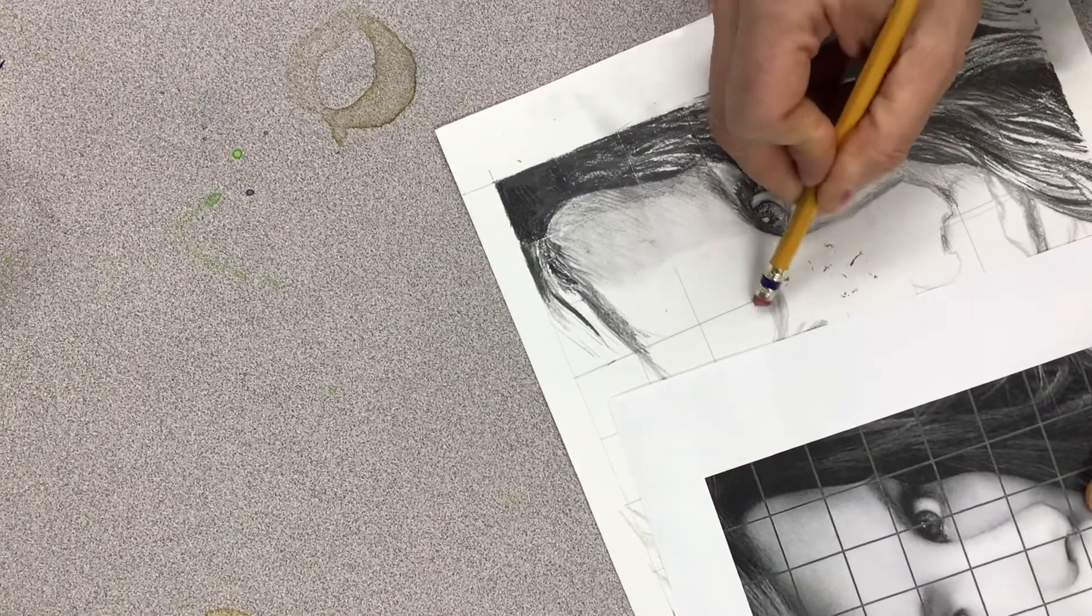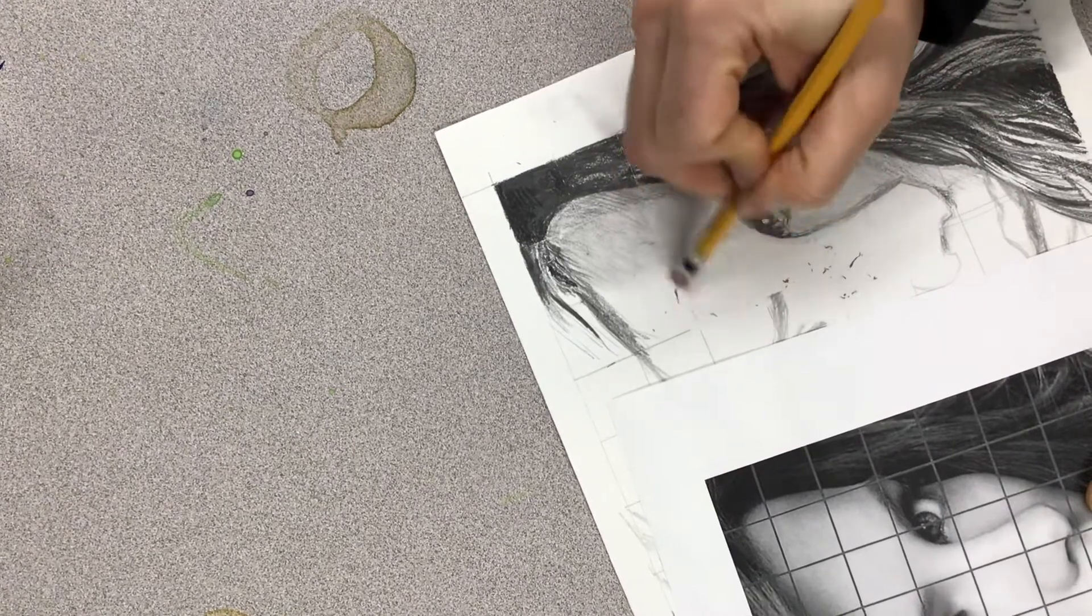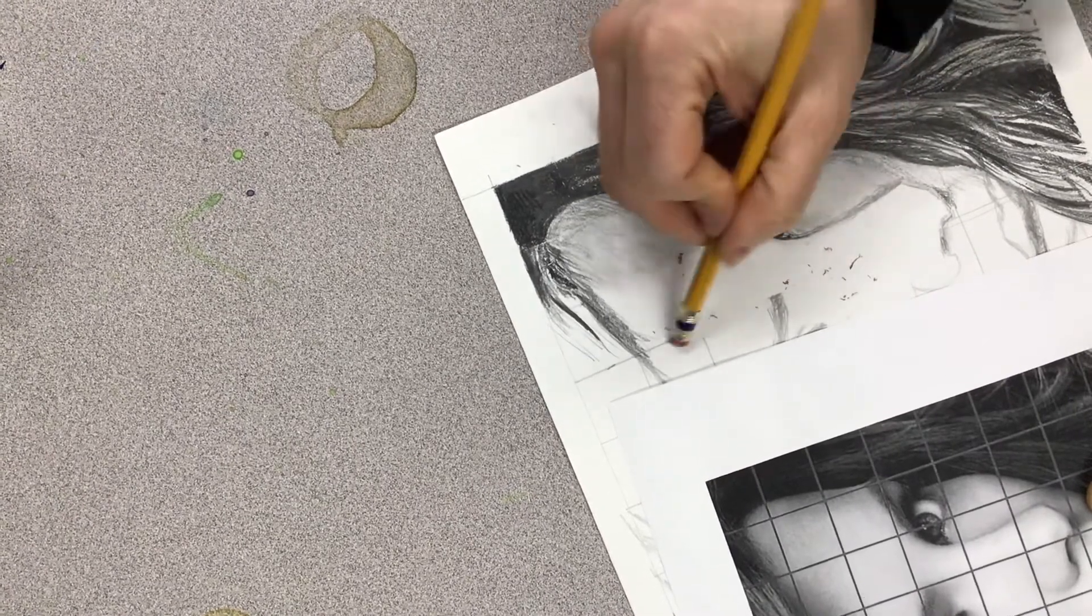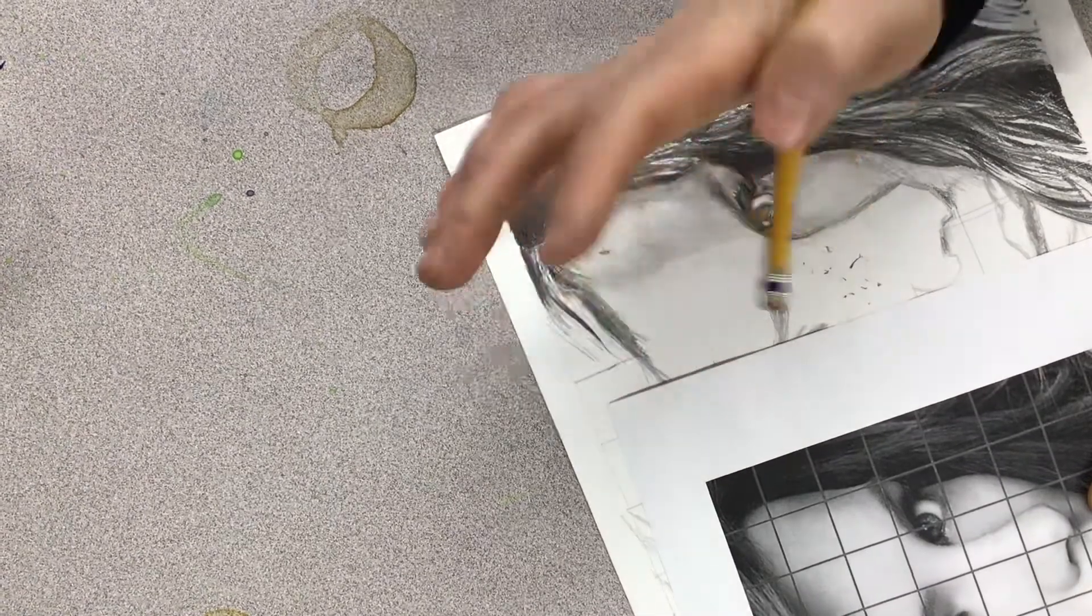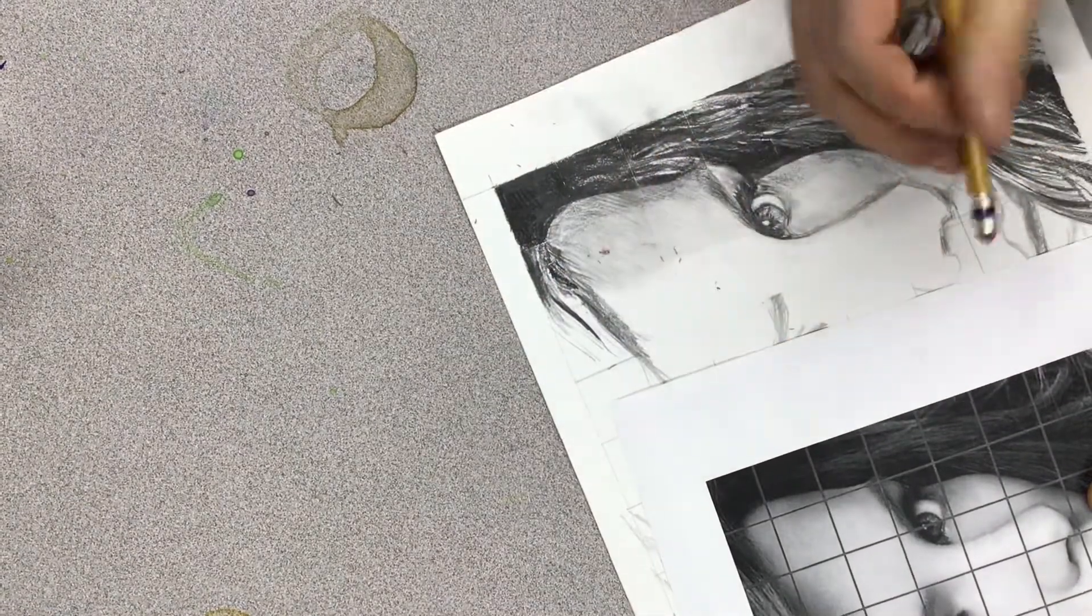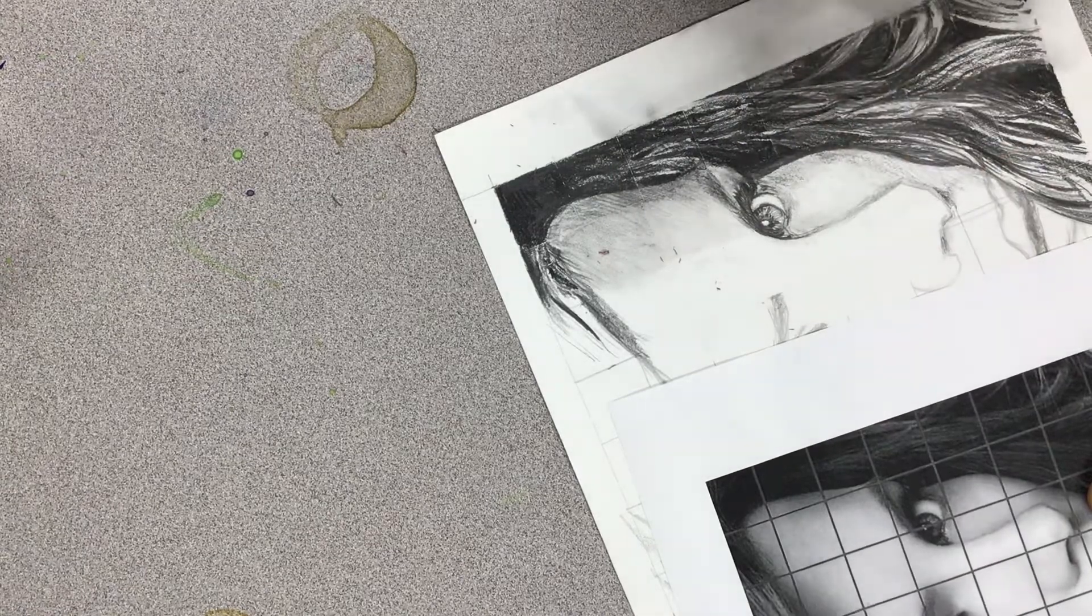Remember I said that before you do any of your shading, you can go ahead and just erase some of those lines. And so we're going to get rid of that. Otherwise, you're going to have to erase them after you've done your blending and then your shading, and then that makes it so you have to go back over it again.